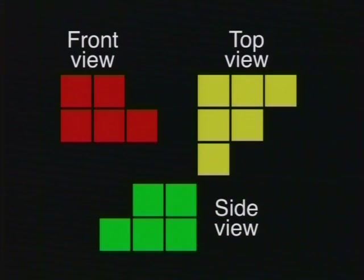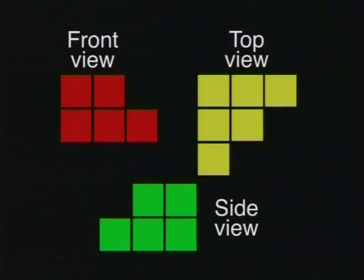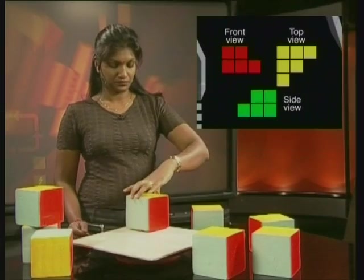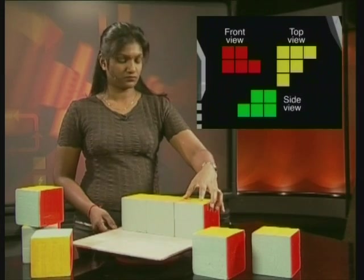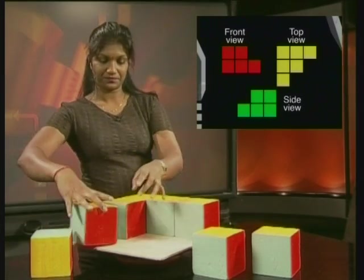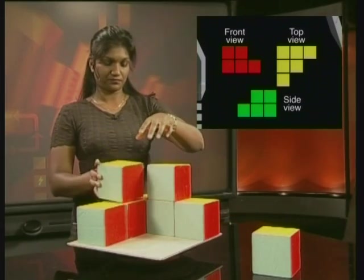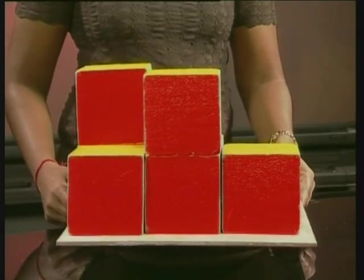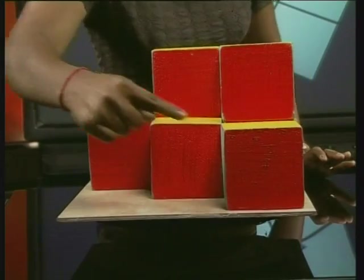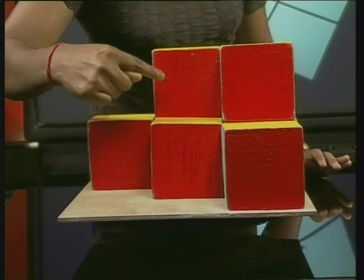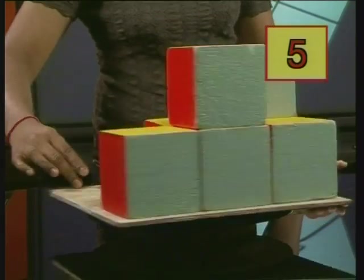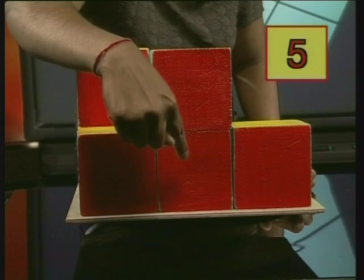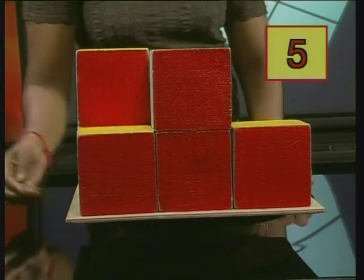Here are three views of one more structure. Let's see if you can work out the surface area of this structure. What would you do to tackle this problem? I think we should have a close look at the views and make the structure first using those views. To find the surface area, we need to count the number of surfaces. We count one, two, three, four, five surfaces in the front view. Let's have a look at the back view — we've got one, two, three, four, five surfaces as well.